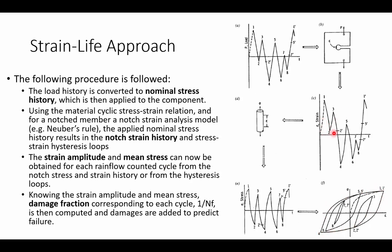And for those where we get stuck, where we encounter another part of the roof, we'll end up with partial loops. Once we've used that rainflow method and we've created these hysteresis loops, we can then go and use the Morrow mean stress correction version of the strain-life equation, and we can use our cumulative damage equations to predict cycles to failure. Of course, this is a fairly complicated process.